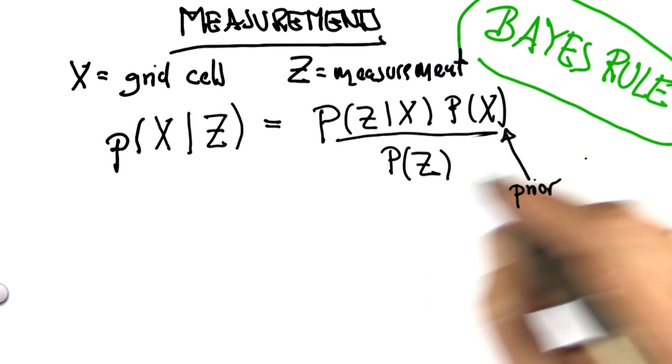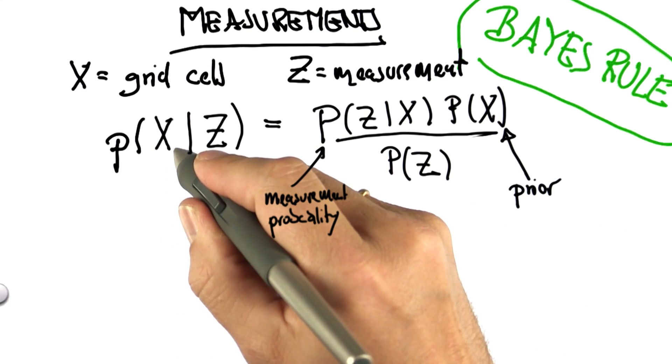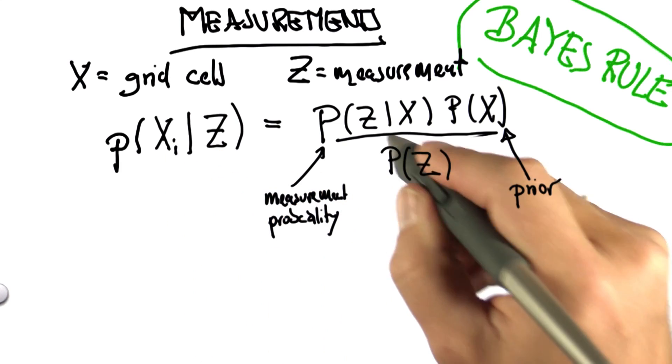Recognize this. This was our prior. This was our measurement probability. If we do this for all the grid cells, we put a little index i over here.